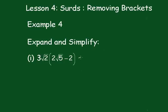Now, removing the brackets, we get 3√2 times 2√5 minus 3√2 times 2.